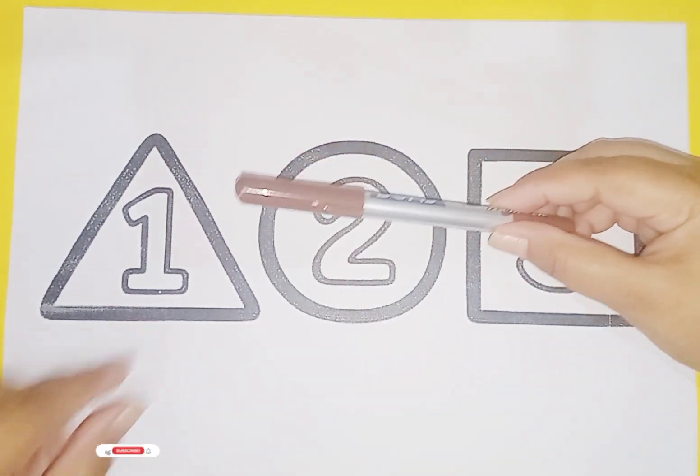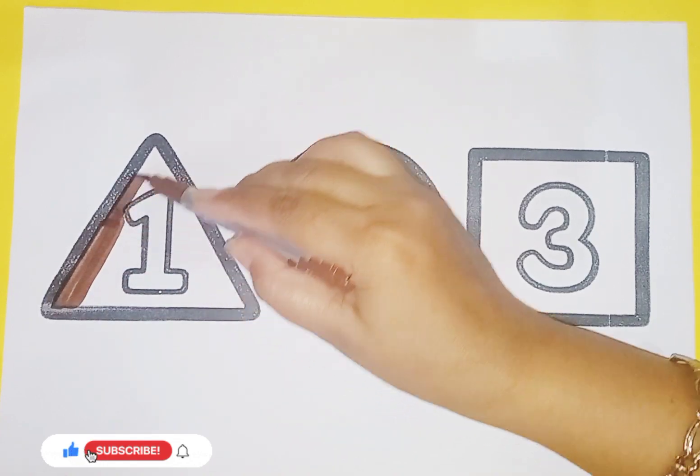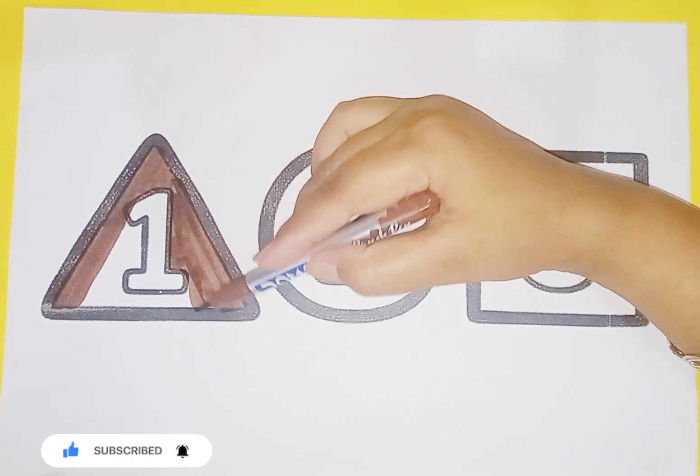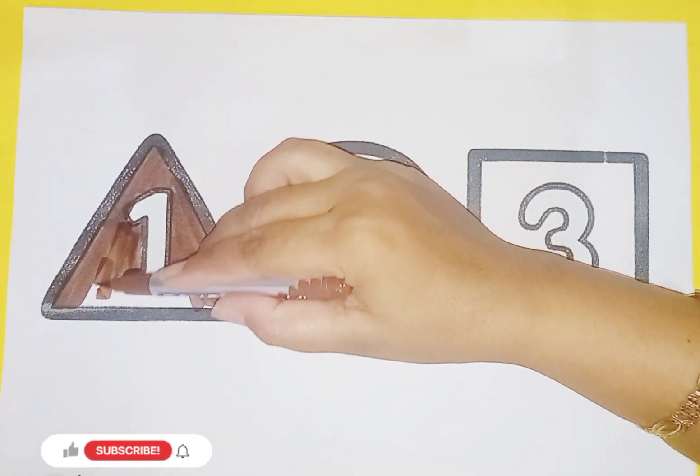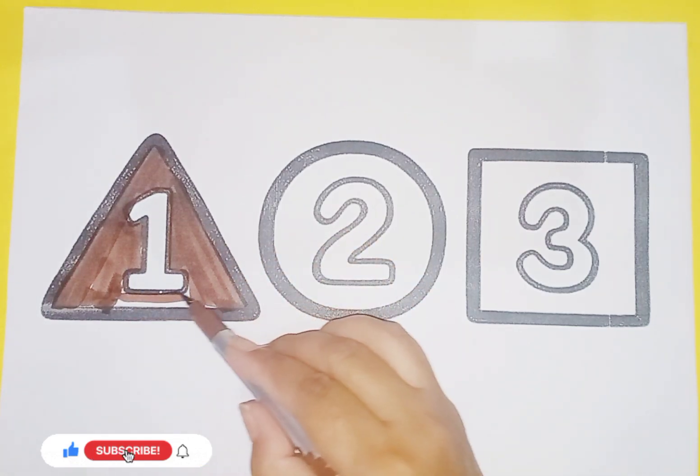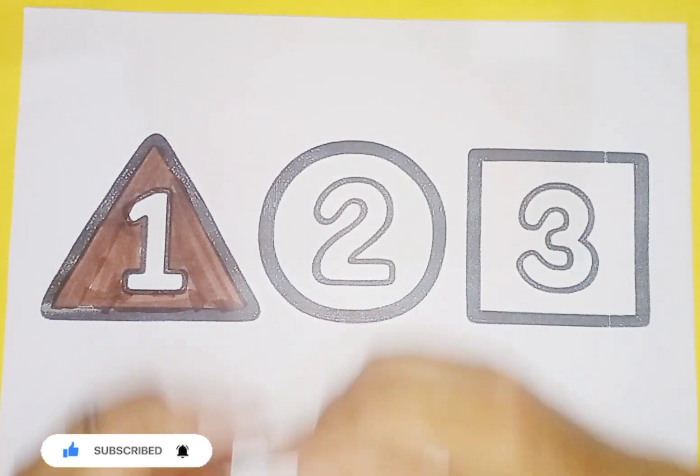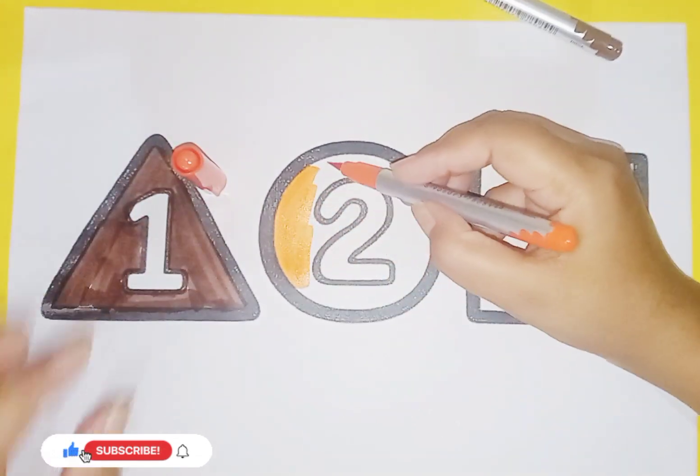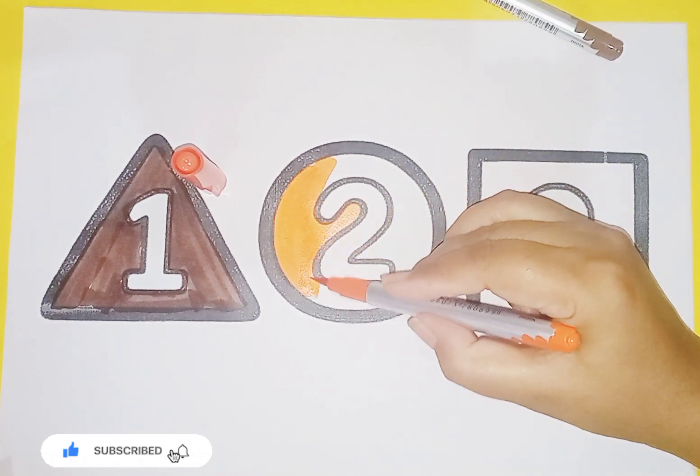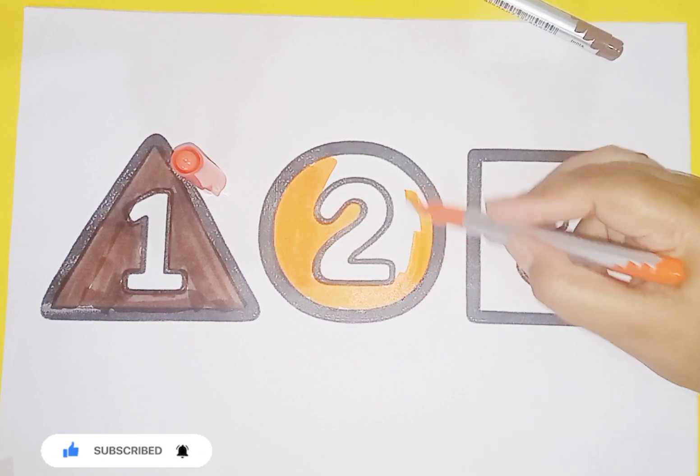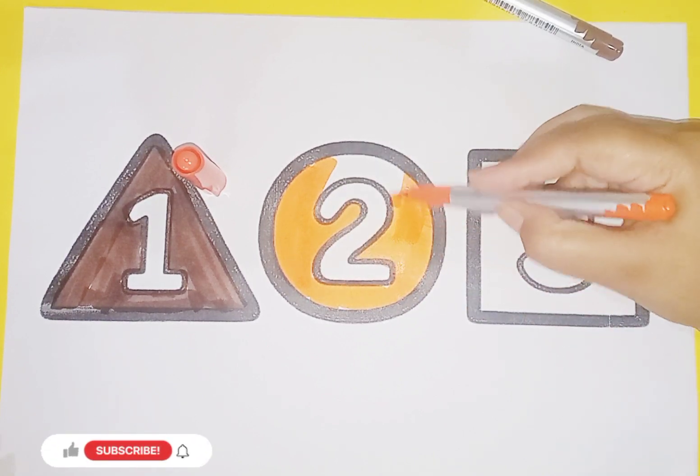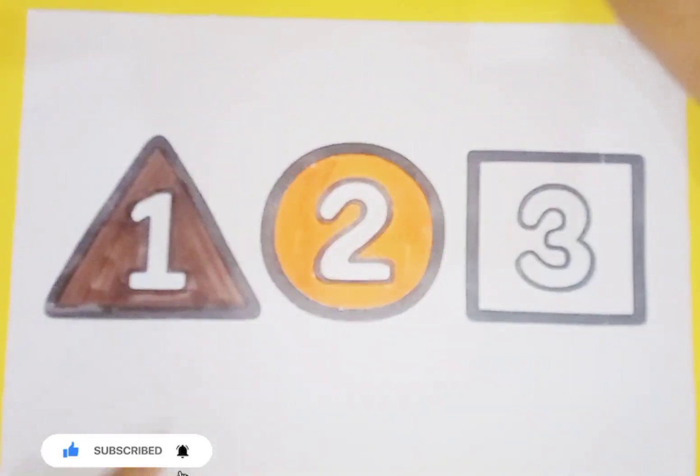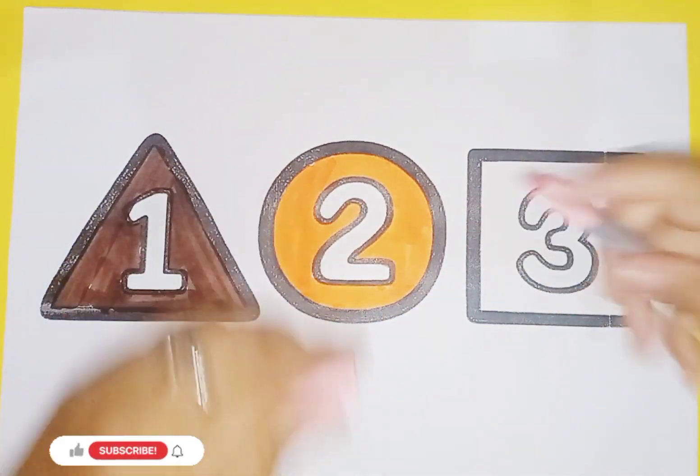Brown color triangle. Orange color circle. Light pink color square.